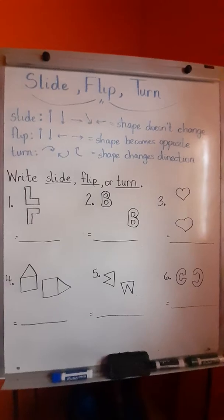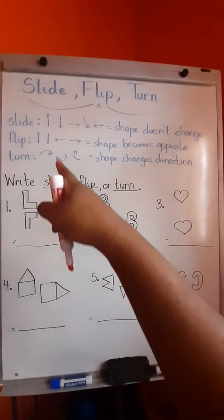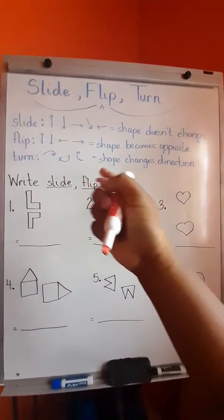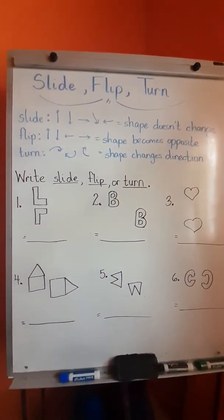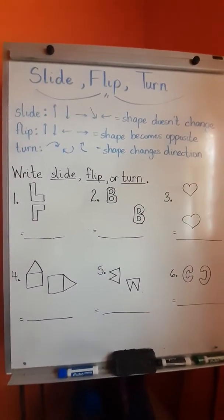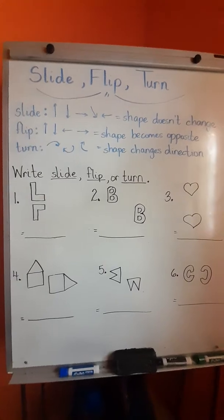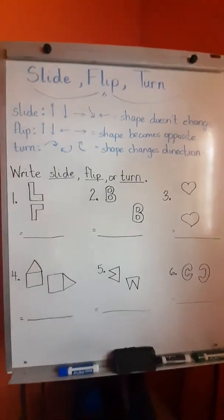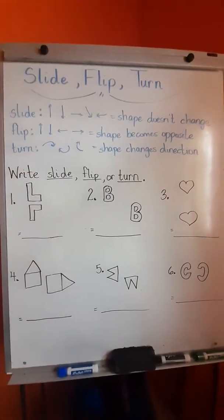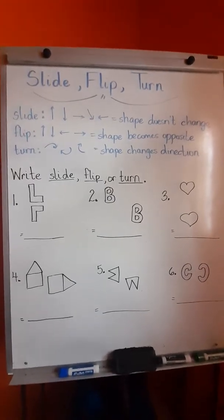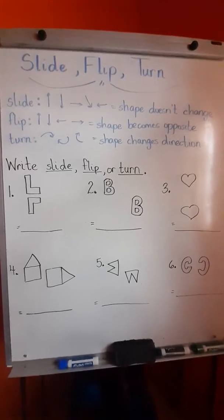When a shape turns, I have some arrows here just to give you an idea of what a turn looks like. It's when you're going basically around in a circular motion. When a shape moves in a circular motion, it changes direction. So let's apply those steps and that knowledge of slide, flip, and turn to these shapes.